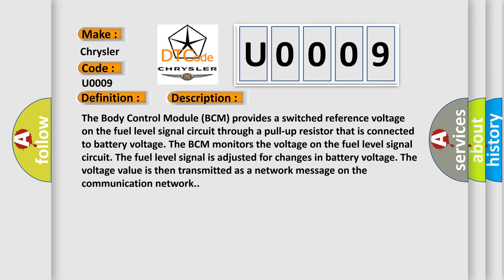The fuel level signal is adjusted for changes in battery voltage. The voltage value is then transmitted as a network message on the communication network.